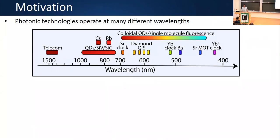We're motivated, like many people here, by photonic quantum information science. One of the distinguishing features of this field is that there's a broad range of different physical systems that people are investigating. As a result, we need access to a very broad range of wavelengths. Over the shorter wavelengths near the UV, we already heard about trapped ions; there's also neutral atoms. These things power clocks, for example.